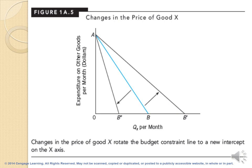If the price of good X increases, the budget line shifts from AB to AB', and we will have fewer quantities of good X. If the price of good X decreases, we will have more quantities, so the budget constraint line AB shifts to AB'. Note that the quantity of expenditure on other goods per month on the vertical axis remains at point A despite the change in the price of good X, because the price of other goods is fixed and constant.